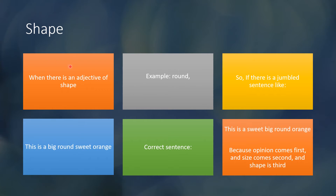The next component is shape. When there is an adjective of shape — for example, round — if there is a jumbled sentence like 'This is a big round sweet orange,' the correct sentence will be 'This is a sweet big round orange,' because opinion comes first, size comes second, and shape is third.